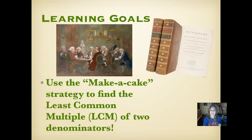Samuel Johnson actually wrote the Dictionary of the English Language. He published it in 1775, so you can see he was right around the time that America declared independence. But he was a Tory and he lived in England. Our individual lesson learning goals are to use the make a cake strategy to find the least common multiple, or LCM, as we'll be identifying it, of two denominators.